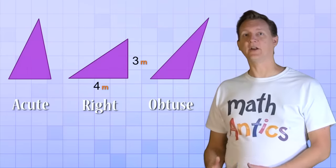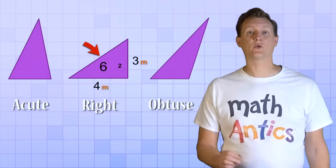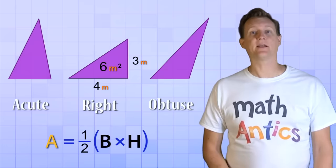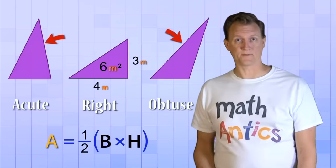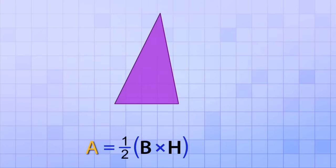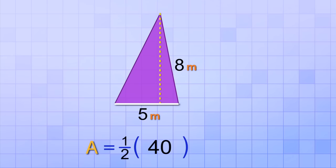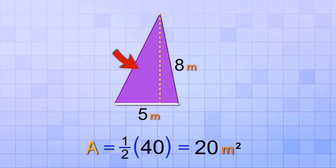We already know the right triangle's area was 6 square meters. Now let's practice using the formula for the other two triangles. The base of this acute triangle is 5 meters and its height is 8 meters. Plugging those into our formula: area equals one-half of 5 times 8. 5 times 8 is 40, and one-half of 40 is 20. So the area of this triangle is 20 meters squared.